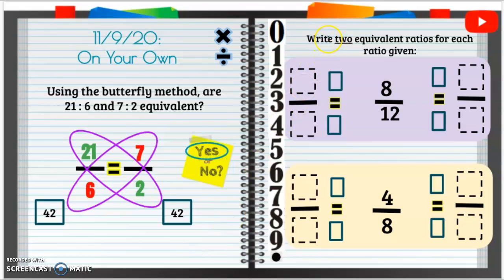All right, let's take a look over here. Write two equivalent ratios for each ratio given. We know how to do this. We can either multiply or divide both the numerator and denominator by the same number, and remember what you do to the top you must do to the bottom.